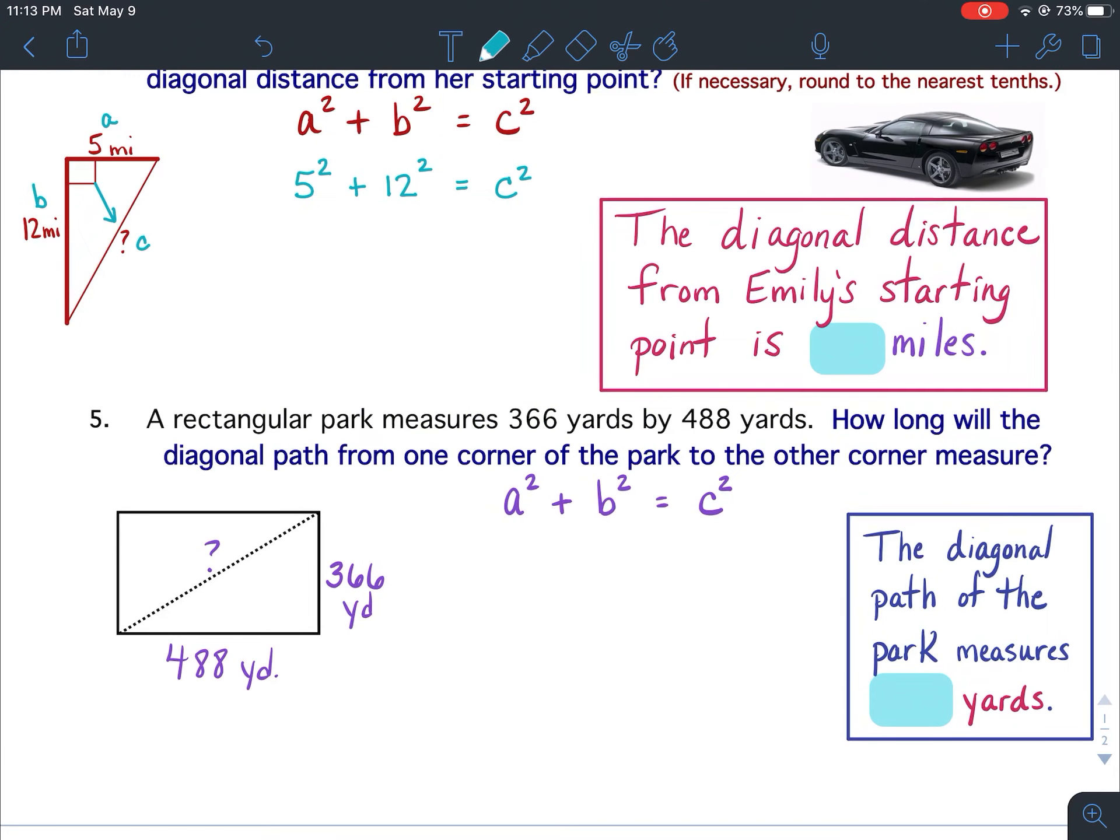Okay number five. A rectangular park measures 366 yards by 488 yards. How long will the diagonal path from one corner of the park to the other corner measure?